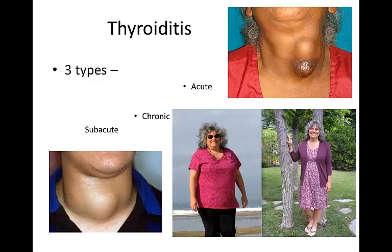Thyroid function can remain normal, although hyperthyroidism or hypothyroidism may develop. Chronic thyroiditis, which occurs most frequently in women between the ages of 30 and 50, has been termed Hashimoto's disease or chronic lymphocytic thyroiditis. Its diagnosis is based on the histologic appearance of the inflamed thyroid gland. In contrast to acute thyroiditis, the chronic forms are usually not accompanied by pain, pressure symptoms, or fever, and thyroid activity is usually normal or low rather than increased.